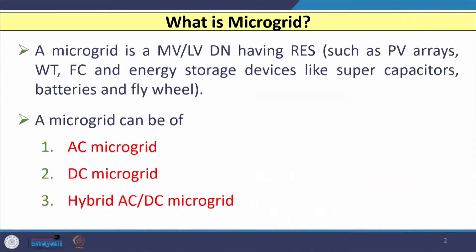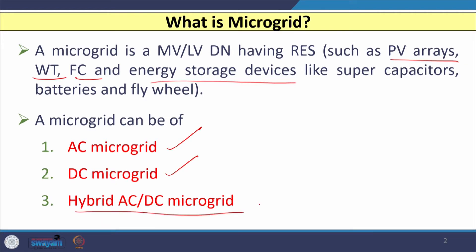A microgrid is a medium voltage or low voltage distribution network having renewable energy sources as distributed generators or distributed energy resources such as photovoltaic-based generators, wind turbines, fuel cells, and several energy storage devices like supercapacitors, batteries, and flywheels. A microgrid can be an AC microgrid, DC microgrid, or hybrid AC-DC microgrid.